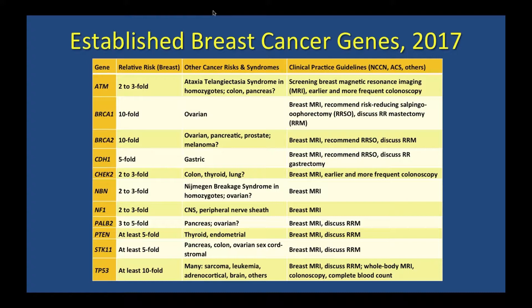As of 2017, the established breast cancer genes per guidelines include ATM, CHEK2, and PALB2 as the ones seen most in the clinic, probably giving about a two- to five-fold increase in risk. We have expanded beyond BRCA1 and BRCA2. For all these genes, clinical practice guidelines recommend screening with breast MRI in addition to mammography, covered by insurance, and doctors should discuss options for risk-reducing surgery.